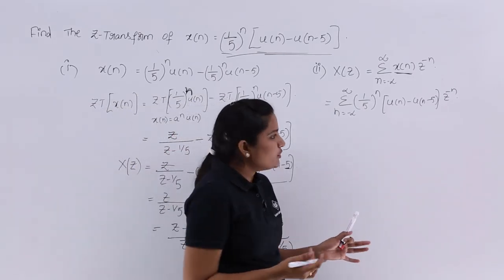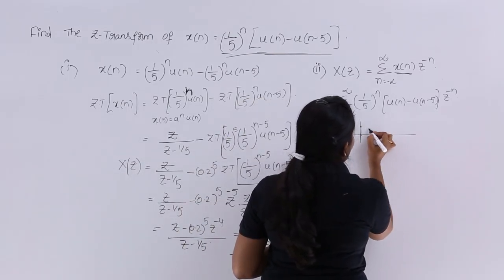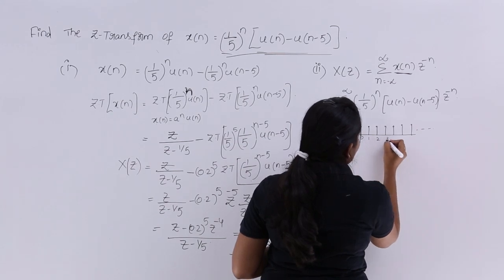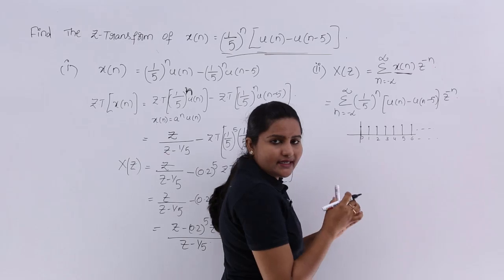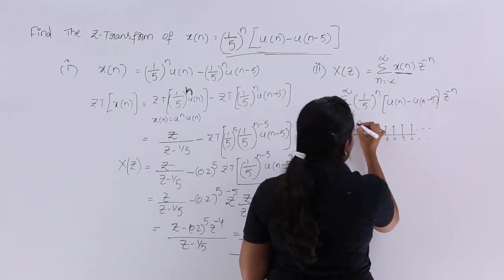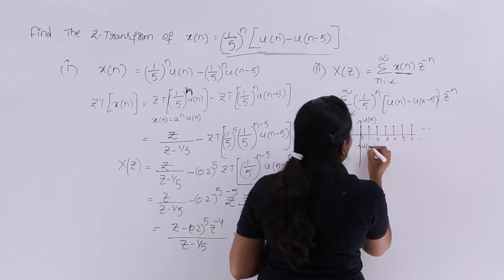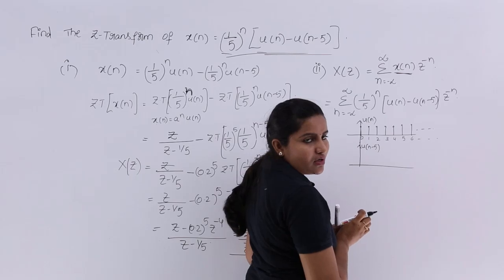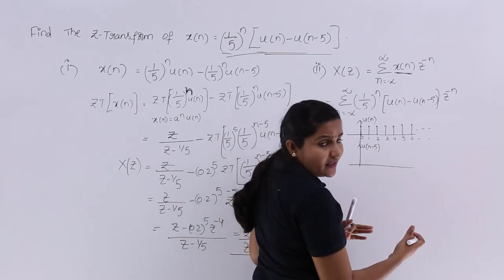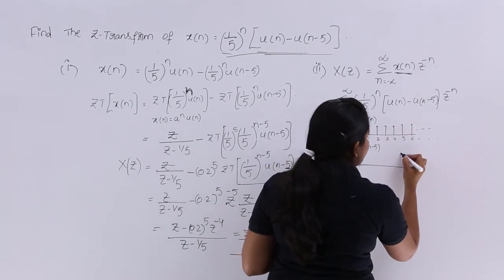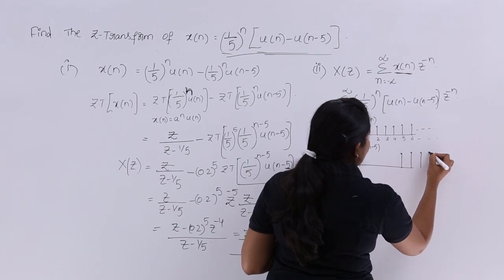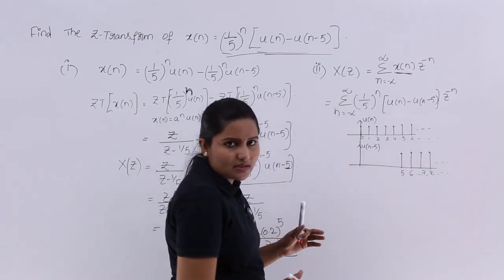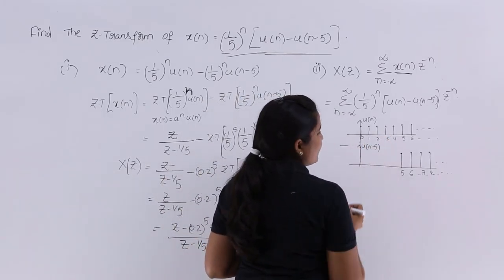The signal u(n) starts from n=0 and goes to infinity. The signal u(n-5) is a right-shifted version, starting from n=5. So u(n) - u(n-5): from n=0 to 4 the amplitude is 1 minus 0 = 1, and from n=5 onwards both u(n) and u(n-5) equal 1, so they cancel. Therefore u(n) - u(n-5) is a finite duration signal with non-zero values only from n=0 to n=4.